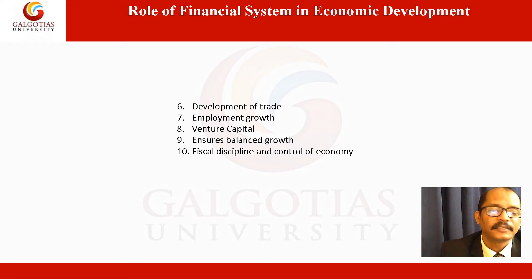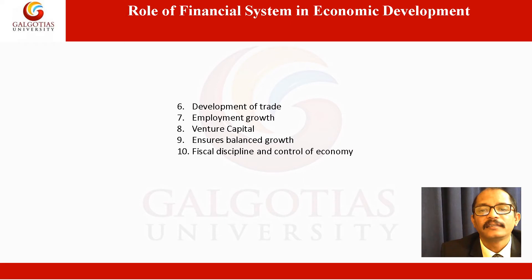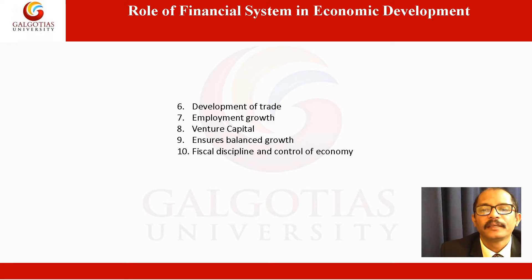The financial system promotes fiscal discipline and controls the economy. Through the financial system, the government can create a congenial business atmosphere so that neither too much inflation nor depression is experienced. Industries should be given suitable protection through the financial system so that their credit requirements are met even during difficult periods. The government can raise adequate resources to meet its financial commitments so that economic development is not hampered. The government can also regulate the financial system through suitable legislation so that unwanted or speculative transactions can be avoided.